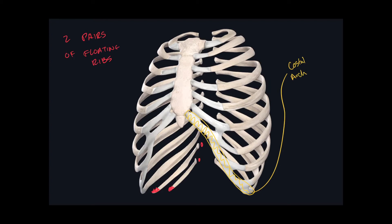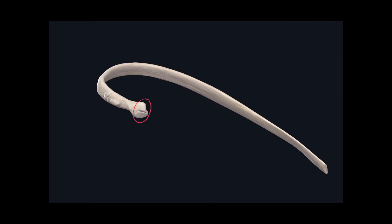Now we know all the structures of the thoracic cage, we can go ahead and learn the individual landmarks on the ribs and then on the sternum. Starting with the ribs, here we have a typical rib. On a rib, we have three different regions. The first one is called the head of a rib. We have a narrowing just distal to the head of the rib, which is called the neck. And then we have the long portion, which is called the body of the rib.